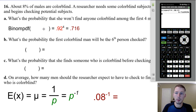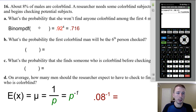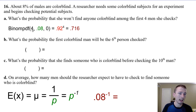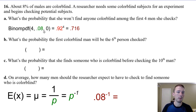For the AP test, when writing out your calculator work, make sure to define your terms: state N = 4, P = 0.08, X = 0, so the graders know what calculator function you're using regardless of which calculator you have.